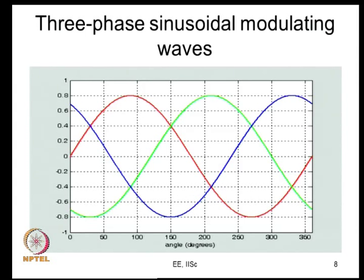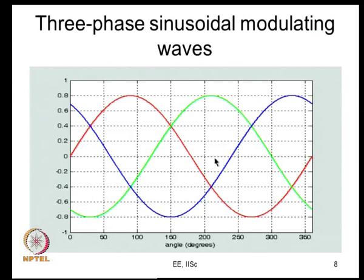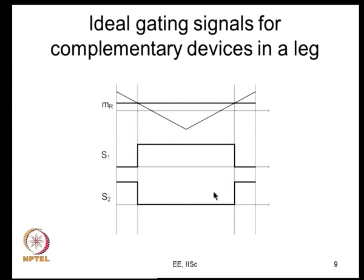Looking at the best known example - sine triangle PWM - three phase sinusoidal signals corresponding to R, Y, and B phases are compared against a high frequency triangular carrier to produce PWM signals. The output gives the top device gating signal and the complement gives the bottom device. After PWM generation, dead time is introduced, creating a small difference.